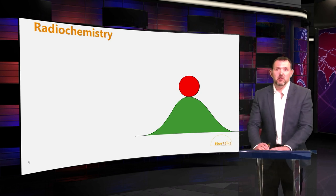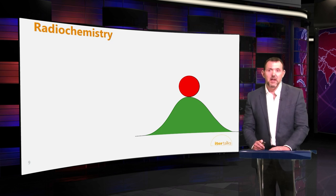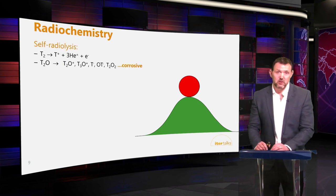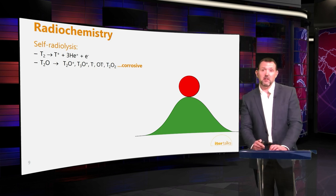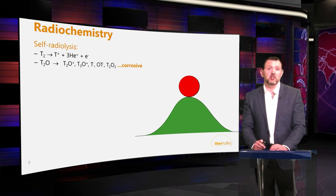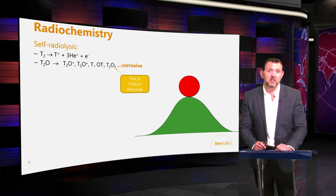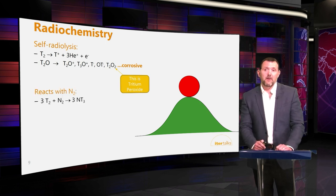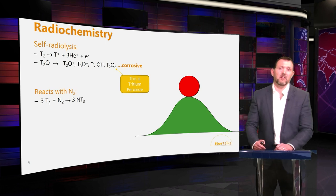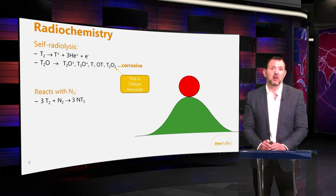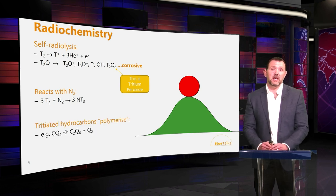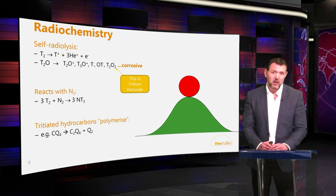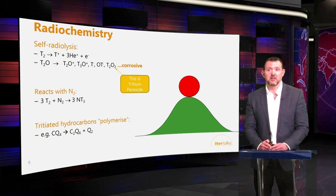The next property is radiochemistry. Even though the beta particle is very weak, it has the ability to catalyze reactions that one would not normally expect protium to undergo. At very high concentrations, particularly in the water form, we can see various mixtures of compounds formed — for example, tritiated peroxide, which is highly corrosive. Tritium also reacts with other gases that you would not normally expect without high temperatures or a catalyst, such as formation of tritiated ammonia. Finally, it can promote polymerization in organic compounds — something to be aware of when dealing with higher concentrations of tritiated products.